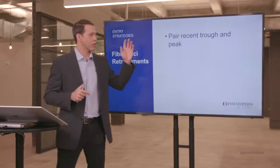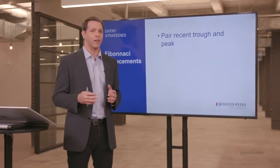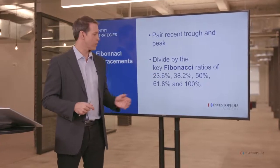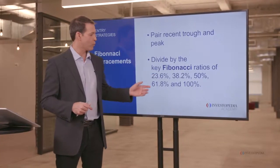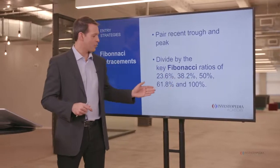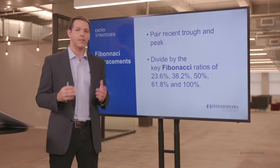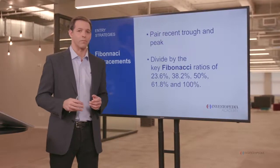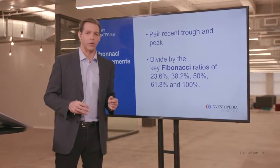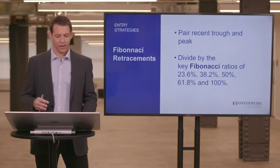What you do with Fibonacci retracements is you pair a recent trough and a peak, and you divide this distance by the key Fibonacci ratios of 23.6%, 38.2%, 50%, 61.8%, and 100%. These give you key levels of support. Now I'm going to show you how to draw these Fibonacci ratios — let's go over some charts to outline that right now.